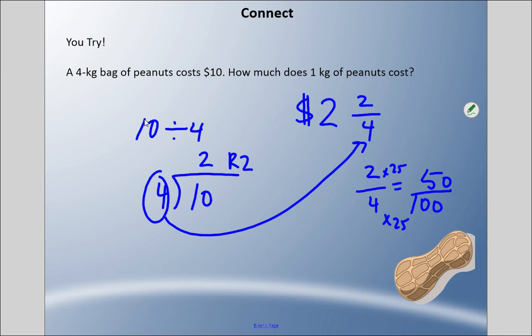What is 50 out of 100? Well, that is 0.50. There's a decimal there, and I have two dollars, so the answer is each kilogram of peanuts will cost two dollars and fifty cents.